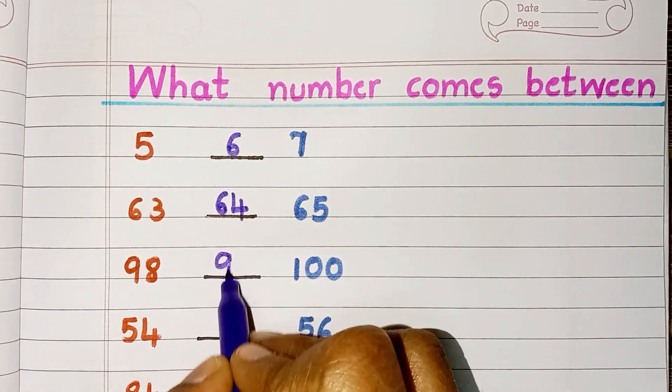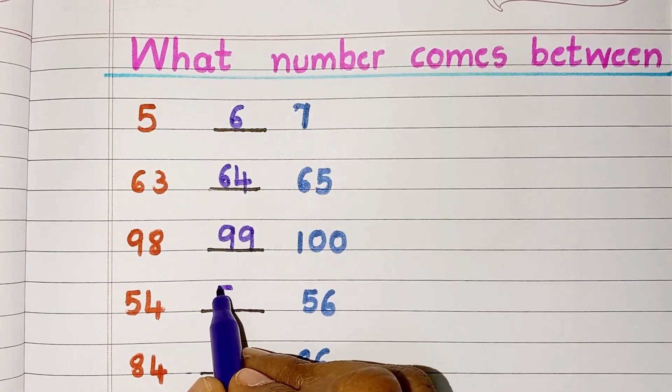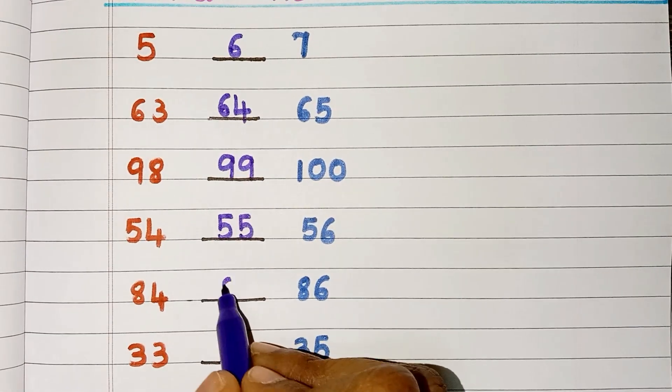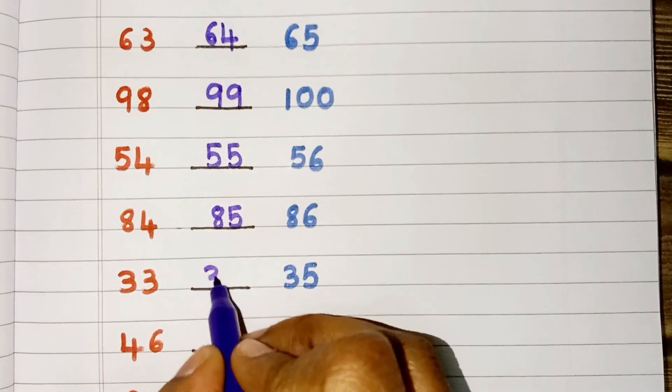Number between 54 and 56 is 55. Number between 84 and 86 is 85. Number between 33 and 35 is 34.